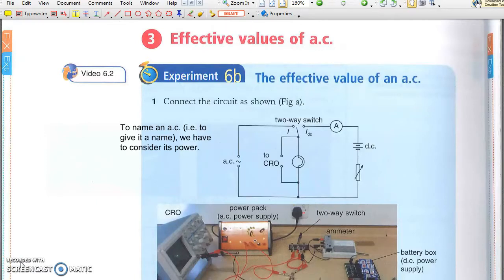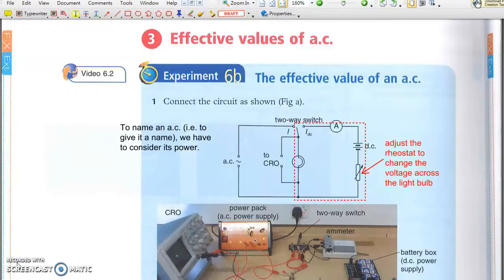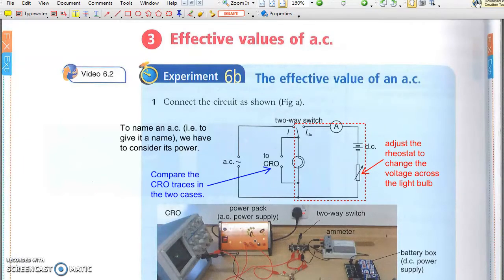In the following experiment, a light bulb is connected to a two-way switch. First, it is powered by an AC, and then to DC. The DC voltage is then adjusted so that the light bulb looks equally bright. In this way, we can find the effective value of the AC.